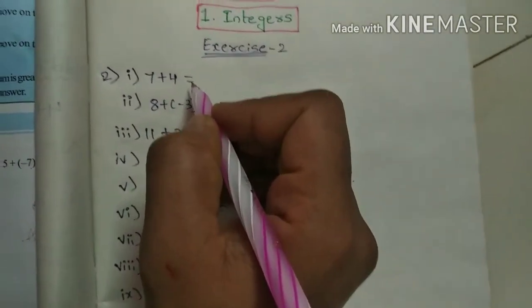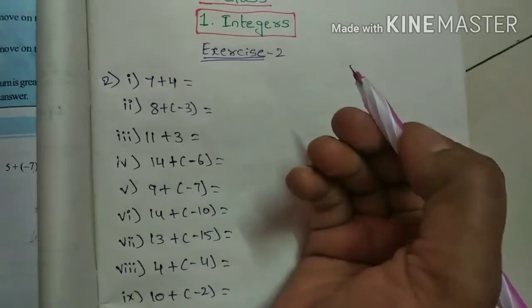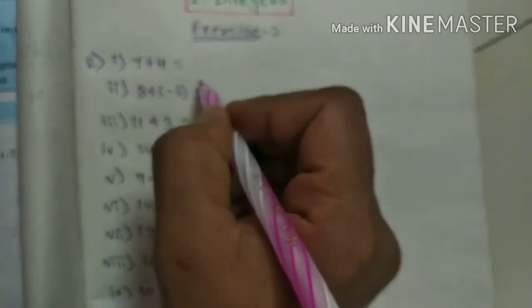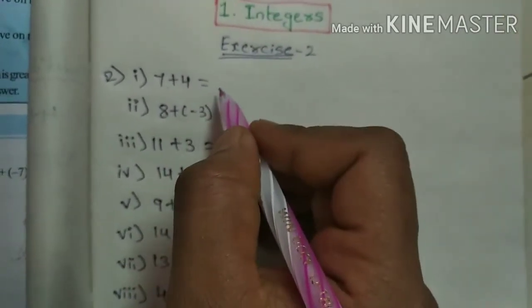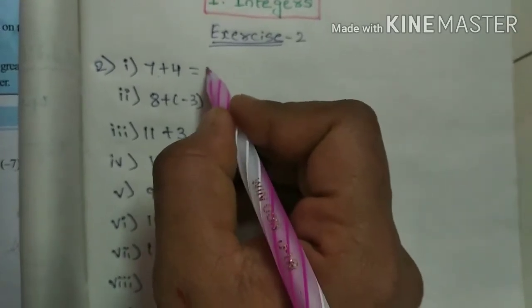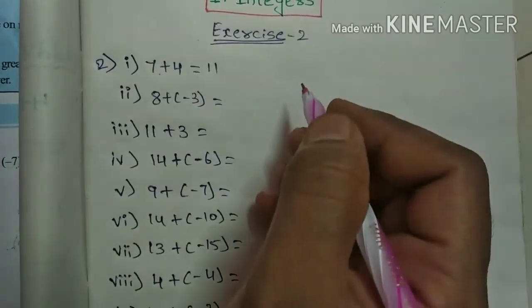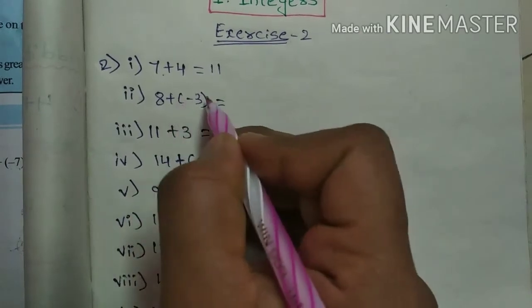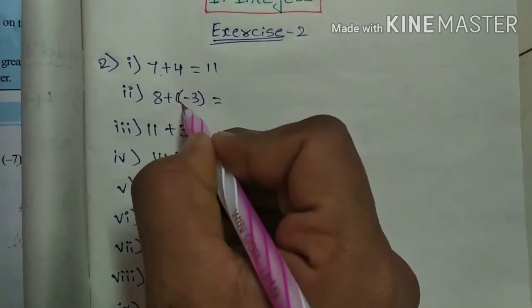We should do additions here. So 7 plus 4, we know that's 11, so directly write 11. Next, 8 plus of minus 3. Here, the bracket—